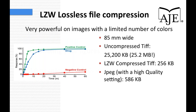LZW lossless compression becomes even more powerful on images with a limited number of colors. In this example, an uncompressed TIFF saved at 25,200 kilobytes — that's 25.2 megabytes, a huge file. This makes it harder to email to colleagues, upload for conference approval, or send to print. However, an LZW compressed TIFF saved at only 256 kilobytes, and even a JPEG with a high-quality setting saved higher than that at 586 kilobytes. The difference between compressed and uncompressed TIFF is almost 100-fold.